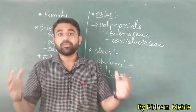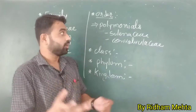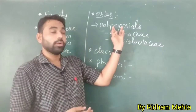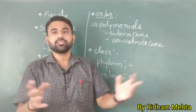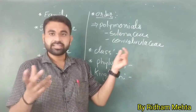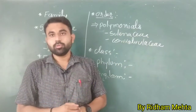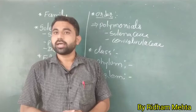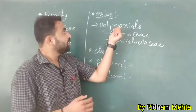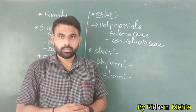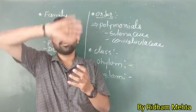Similarly in the plant kingdom, different families are grouped together to form plant orders. For example, the order Polemoniales has two families within it — the largest family Solanaceae and the second family Convolvulaceae. So both Convolvulaceae and Solanaceae are families of the common order Polemoniales.